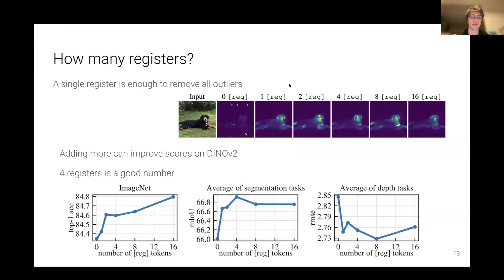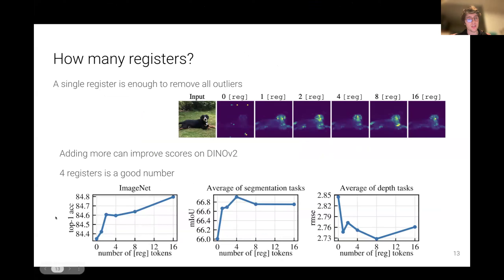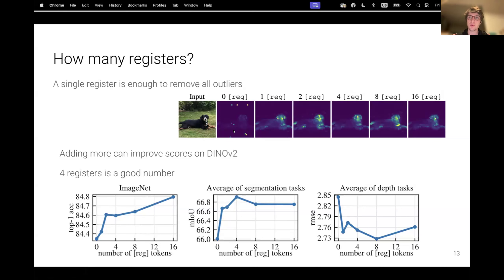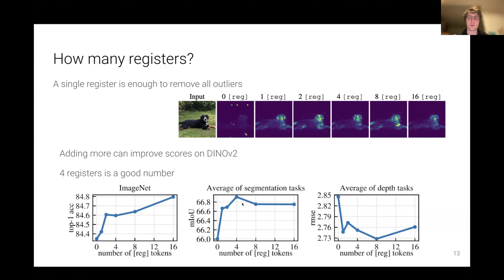We can also ask: how many registers do you want to add? There's not a huge difference between one register and more for the attention maps — one register is enough. But adding more registers can improve downstream scores. For ImageNet classification, the accuracy improves. The gap is not huge — about 0.4 to 0.5 — but it's significant. For segmentation and depth estimation, there seems to be an optimum around four registers. Four is a nice number because it's still low enough to not significantly change the optimization or training flops.